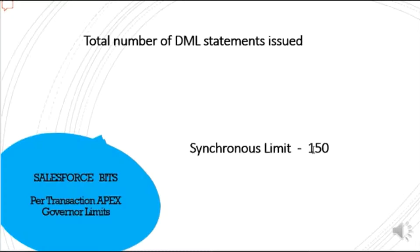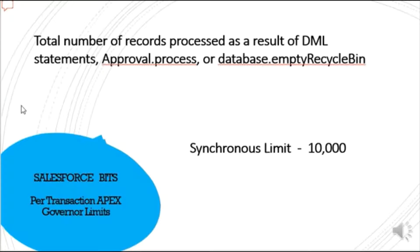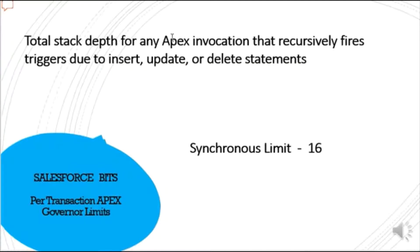Total number of DML statements issued is 150 — at any point in time you can issue 150 DML statements per 24-hour time limit for a user. Total number of records processed as a result of DML statements, approval processes, or database operations is 10,000.